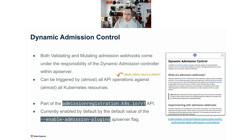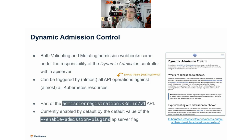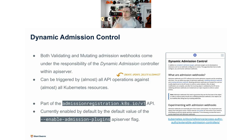Both the validating and mutating webhooks live under the dynamic admission control framework, and they can be triggered by almost all API operations on almost all Kubernetes resources within your cluster. Any time you do a GET, a CREATE, a DELETE, whatever — it is possible to have a webhook triggered based on that action. There is a very slight caveat we'll come to later, but you can use them against almost anything to add validating or mutating logic. Both are part of the AdmissionRegistration API.